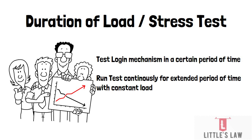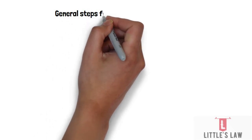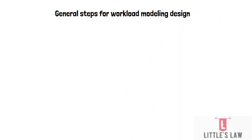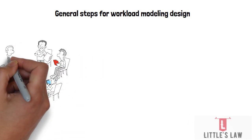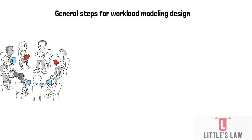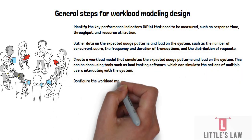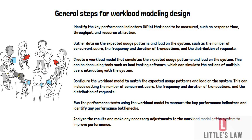Workload modeling for performance testing involves creating a simulation of the expected usage pattern and load on the system. The general steps are: first, identify the key performance indicators (KPIs) to be measured, such as response times, throughput, and resource utilization; second, gather data on expected usage patterns including number of concurrent users, frequency and duration of transactions, and distribution of requests.